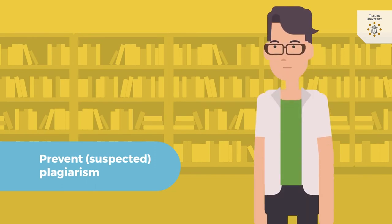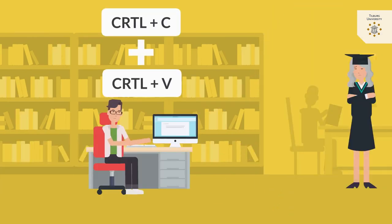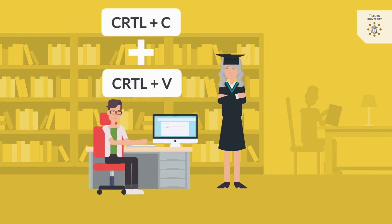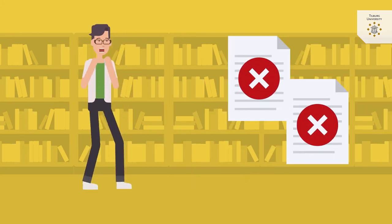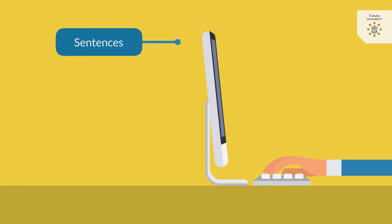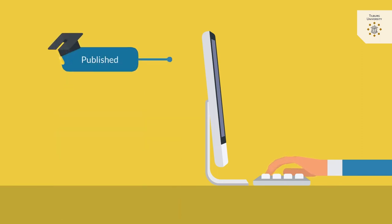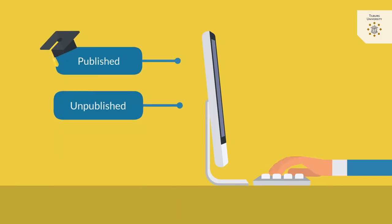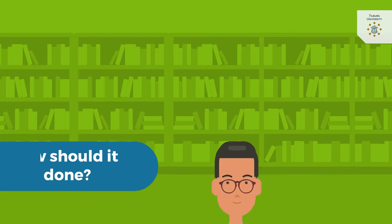Prevent suspected plagiarism. Cutting and pasting is so easy that you sometimes plagiarise without even realising it, yet in some cases it is, in fact, plagiarism. One of the ways in which you commit plagiarism is if you copy sentences, phrases, paragraphs or even ideas from the work of others — published or unpublished — without mentioning the original author. Even if you substitute some words from a paragraph, it is plagiarism.